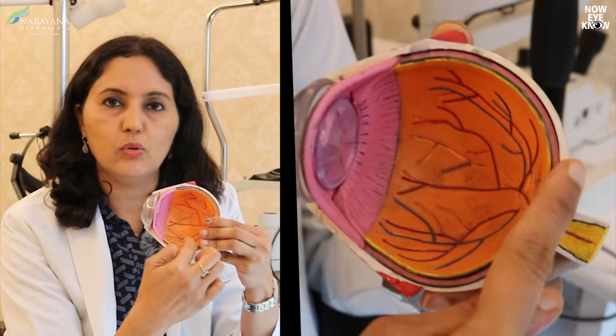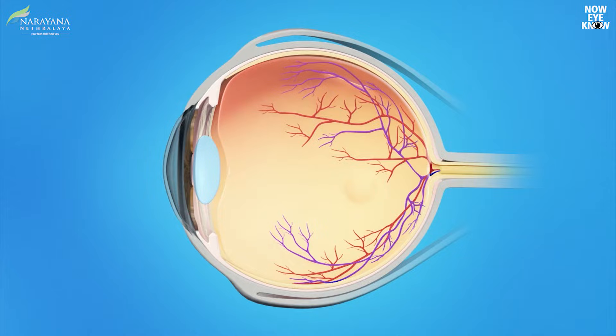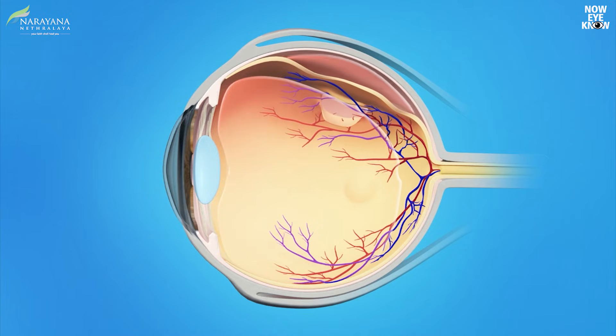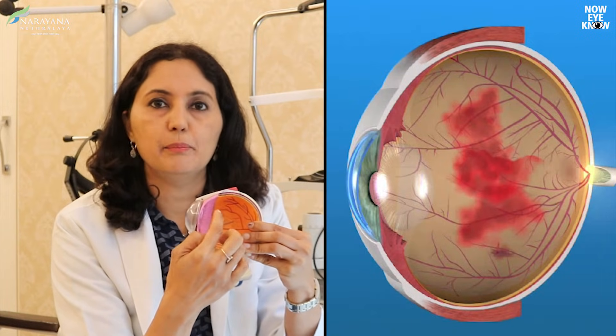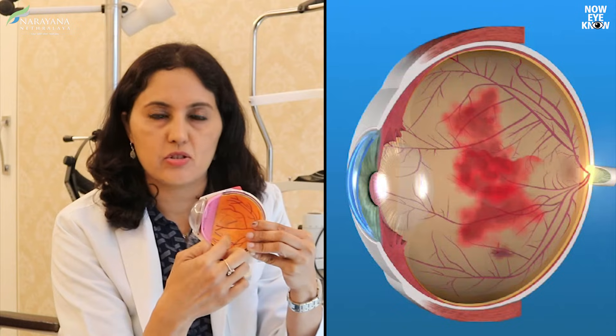Vitrectomy is done for various conditions, including retinal detachment. The retina is a transparent membrane which can separate and start floating in the vitreous, and this can lead to blindness. The retina has to be pushed back to its original place. Vitrectomy is also carried out whenever the entire gel gets filled up with blood — a condition called vitreous hemorrhage.